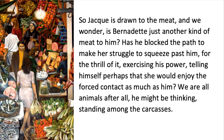When I started writing, I had no twist in my mind at all. I was simply going to write about Jack as a kind of predatory male who's making life really awkward for this woman. So Jack is drawn to the meat. And we wonder, is Bernadette just another kind of meat to him? Has he blocked the path to make her struggle to squeeze past him for the thrill of it, exercising his power, telling himself perhaps that she would enjoy the forced contact as much as him? We're all animals after all, he might be thinking, standing among the carcasses. You might have spotted the use of contrast here - always a really good way to change the mood for the reader. The great thing is, I didn't have to come up with these contrasts. They're in the picture. The artist has done it for me. And whatever picture you get, even if it's a photograph, that will also be true.